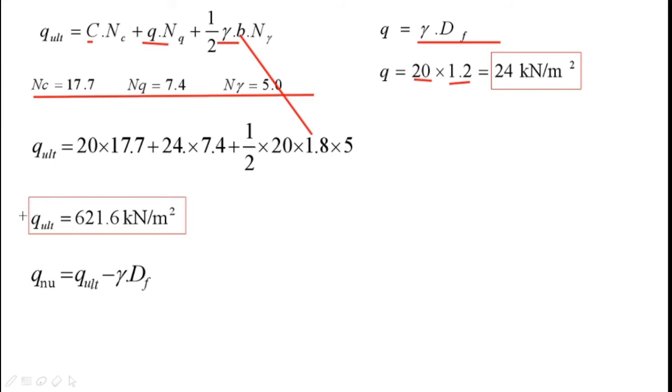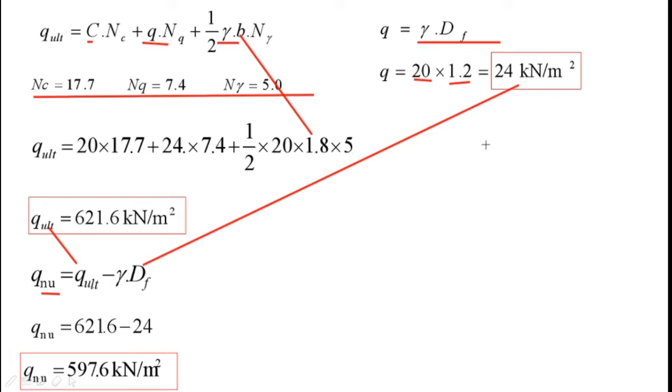Next, as per our flow that you have seen in the previous part, Q_nu, that is net ultimate bearing capacity: from this ultimate bearing capacity, you just subtract the value of γDf, that is 24. You will get the value Q_nu = 597.6 kN/m². As it is a bearing capacity, it has a unit of stress.